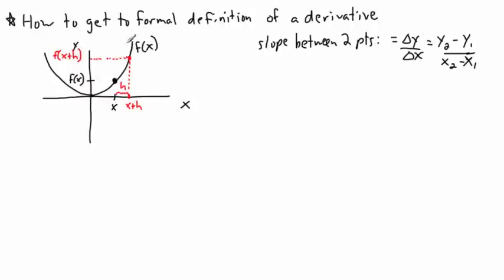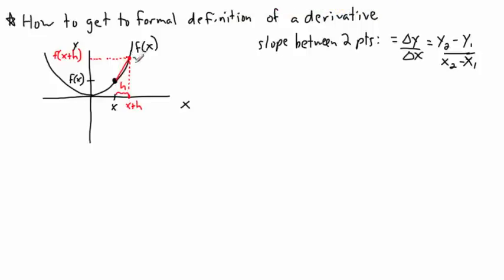Now I'm looking for the slope between these two points — the rise over the run. That means I take delta y, my change in y, and divide by delta x, my change in x. So the derivative f'(x), which is the slope of the tangent at point x, is defined as the rise over run between these two points.